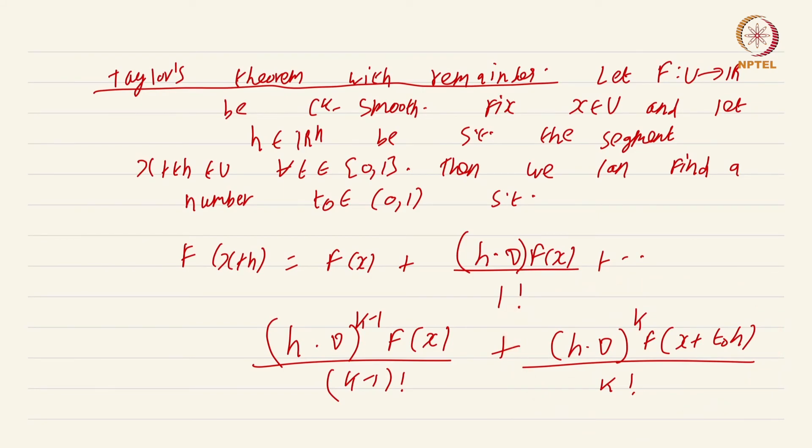The statement looks a bit complicated, but the proof is just reduction to the one variable case. Consider the function g from minus epsilon to 1 to r defined by t goes to f of x plus th. This is well defined because the entire segment from x to x plus h is fully contained in u and u is an open set. Because u is an open set, I can sort of push this a little bit further and take it to minus epsilon, for some suitable epsilon greater than 0. If you choose epsilon small enough this is actually well defined.